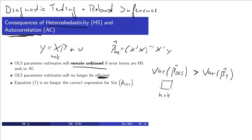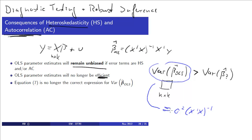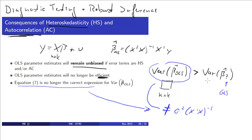More importantly, the formula for this variance, which we have previously written as σ²(X'X)⁻¹, is no longer the correct formula. So equation 7 is no longer the correct expression for the variance of β̂. It turns out the estimator that can produce a smaller variance for β̂ is, for instance, a GLS estimator — generalized least squares — but we will not talk about that here.